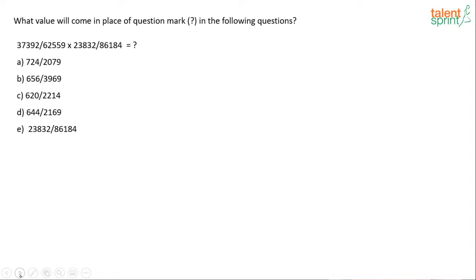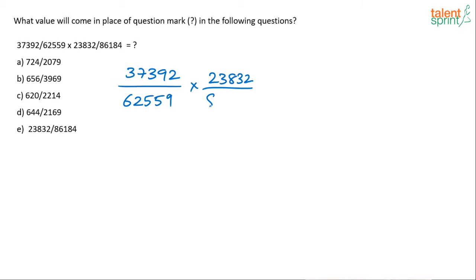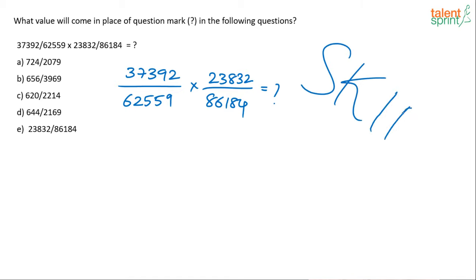The last question: 37392 ÷ 62559 × 23832 ÷ 86184 = ? This involves four 5-digit numbers with divisions. If I were in the exam, I would skip this in the first pass — it would take at least 3 minutes, and in that time you could solve three other questions. Skipping is itself a strategy: not solving this question could earn you more marks overall.